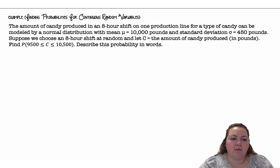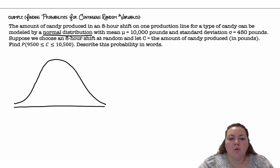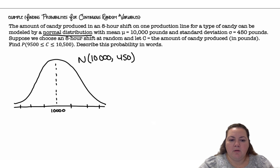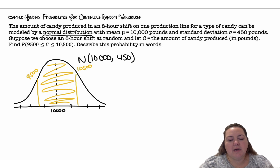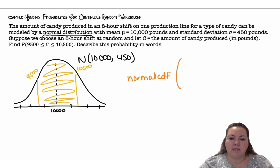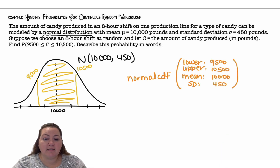Now let's find probabilities for continuous random variables. The amount of candy produced in an eight-hour shift on one production line can be modeled by a normal distribution with a mean of 10,000 pounds and a standard deviation of 450 pounds. Let C equal the amount of candy produced in pounds. Find the probability that C is between 9,500 and 10,500 pounds. To find the area under the normal curve, I use normalCDF with lower bound 9,500, upper bound 10,500, mean 10,000, and standard deviation 450.